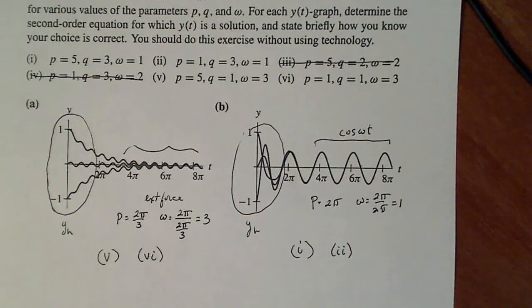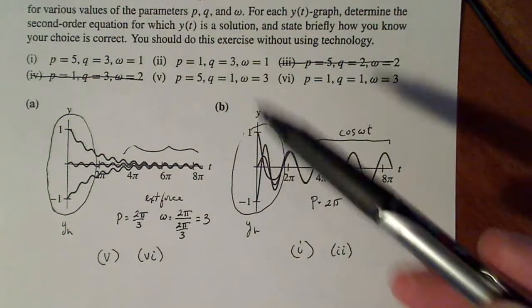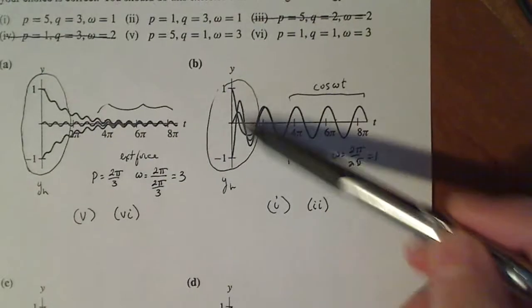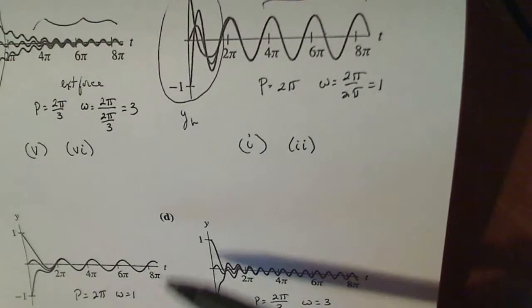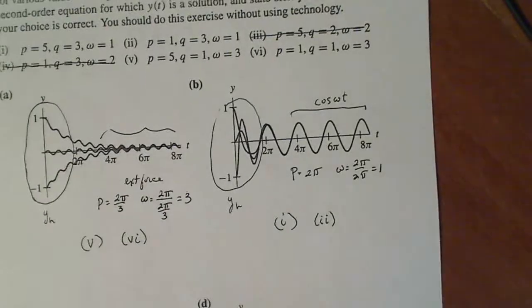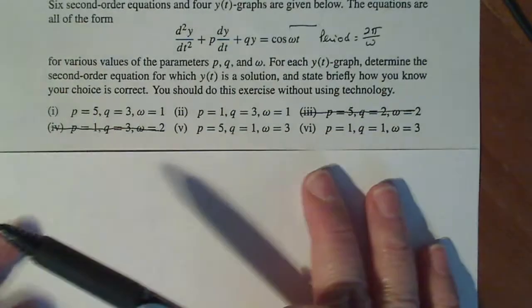So we've narrowed it down to two choices for each. Now the next part is we have to look at the y_h part in each. Do a little bit of calculation to see how it's behaving initially because these are all initially behaving differently. These two have very little oscillation going on at the beginning. But these two have much more oscillation happening at the beginning. So that's a key to what's happening here. So I'm going to go over to my other piece of paper here. And I'm going to start thinking about if I were to go ahead and solve for y_h in each of these cases.